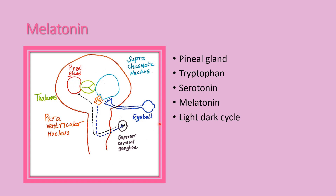When light falls on the eyeball, it inhibits the suprachiasmatic nucleus. The impulse carries through the paraventricular nucleus to the superior cervical ganglion, and via the sympathetic fibers, it decreases melatonin secretion. So during the dark period, melatonin secretion increases, while during the daytime, melatonin secretion decreases.